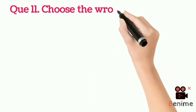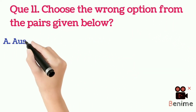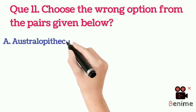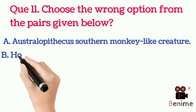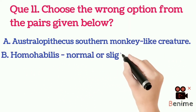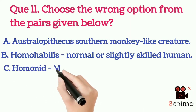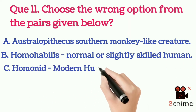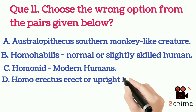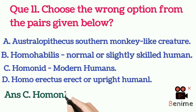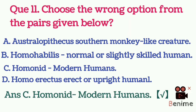Question 11: Choose the wrong option from the pairs given below. A. Australopithecus — southern monkey-like creature. B. Homo habilis — normal or slightly skilled human. C. Homo nad — modern humans. D. Homo erectus — erect or upright human. Answer C: Homo nad — modern humans (this pairing is incorrect).